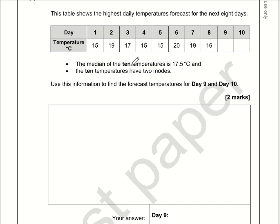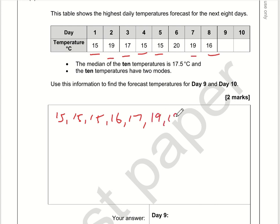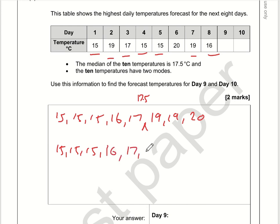When you're dealing with an even number, you will get 2 in the middle — that's worth remembering. So first of all, using these numbers, I'm going to write them in order: 15, 15, 15, 15, 16, 17, two 19s, and a 20. Now, if the median is 17.5, we're taking the mean of the 2 in the middle. The only way we can get 17.5 as the median is if we've got a 17 and an 18.